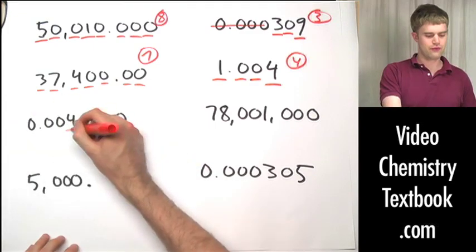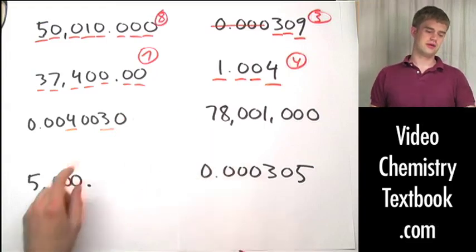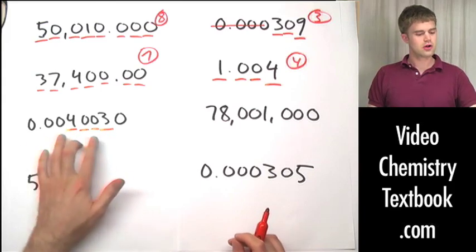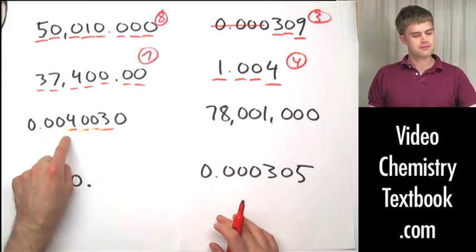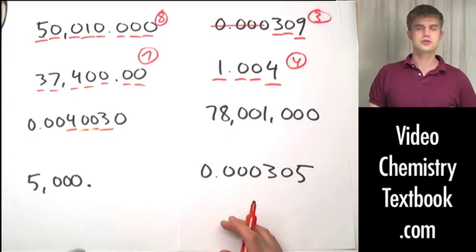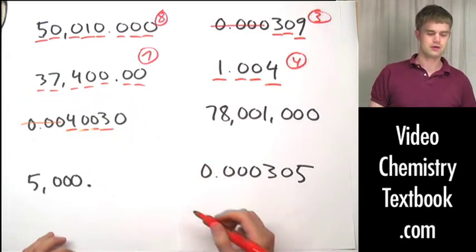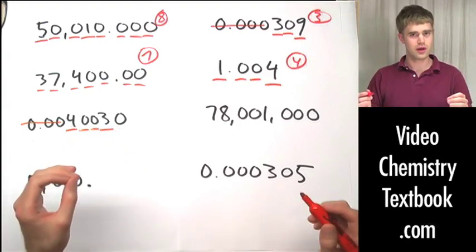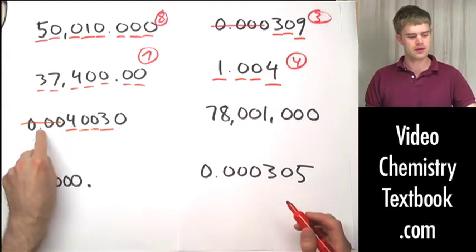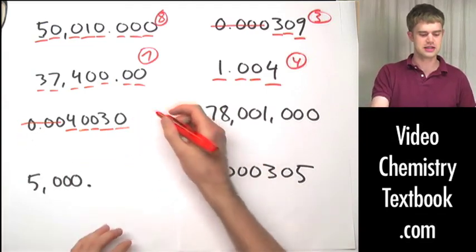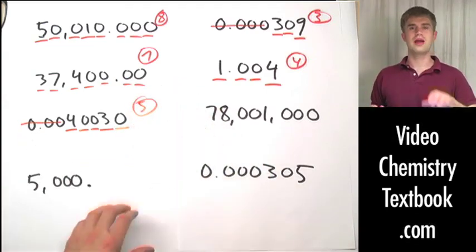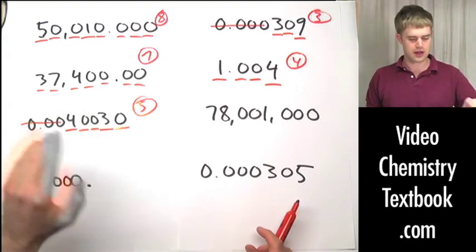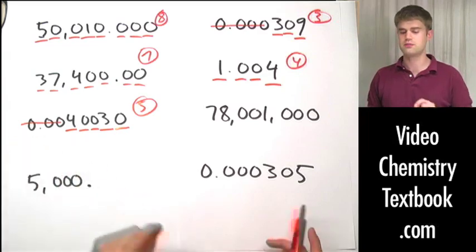In this number, we have a 4 and a 3 that are significant, which means the zeros sandwiched between them are also significant. There are zeros to the left of these significant figures — zeros to the left are not significant. There's also a zero to the right — is there a decimal point? Yes, which means it is significant. Five total significant figures. We had to apply three rules here: sandwiched zeros, zeros to the left, and the zero to the right with a decimal point.